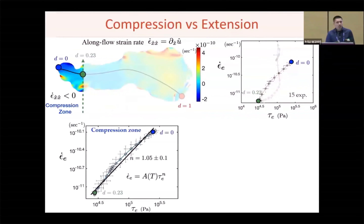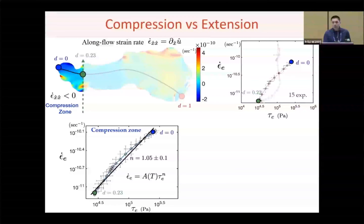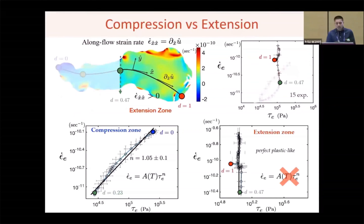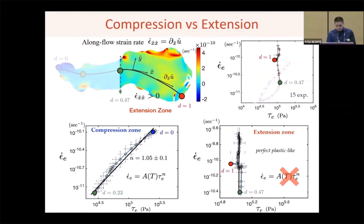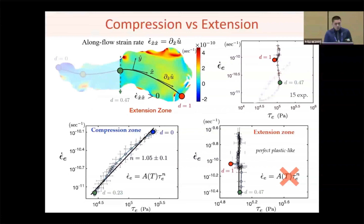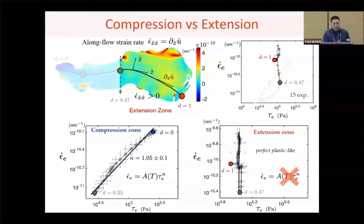If we plot the data in the compression zone only, we see a clear power law relation. However, on the other end, the data in the extension zone follow a vertical line resembling perfect plastic rheology, which also implies that the classical power law description becomes invalid.